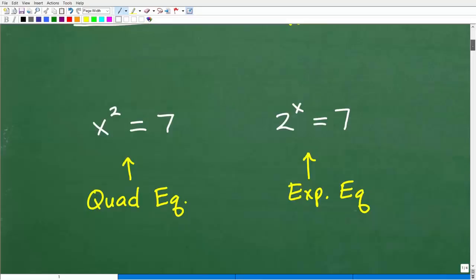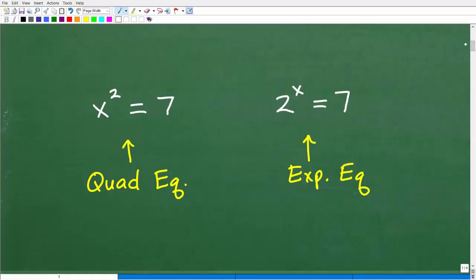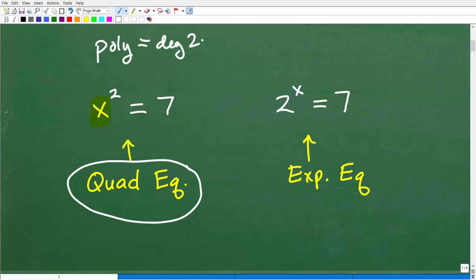Okay, so let's go down here and just define what type of equations we're dealing with. So this first one, x squared, okay, is equal to 7. This is a quadratic equation. Okay, now why it's a quadratic equation? Well, effectively, this little x is what we call a polynomial. It's a real basic polynomial, but it's a degree 2 polynomial. It's a degree 2 polynomial, and by definition, that means it's a quadratic equation.